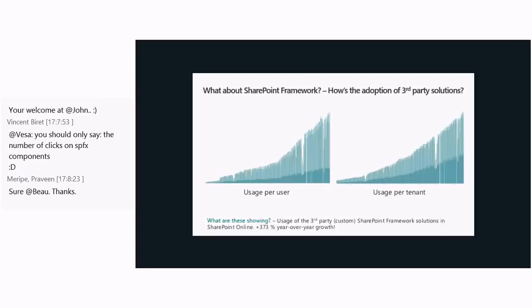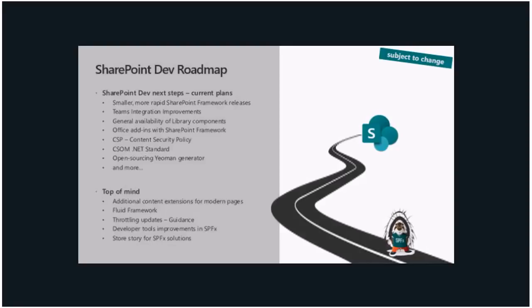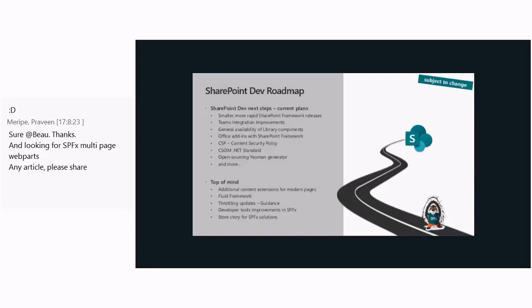Moving on to the roadmap slide — this was the updated roadmap slide used on Tuesday in the dev keynote at SPC. We're planning to move to a monthly release cycle with SharePoint Framework. The idea is that you will always know when there will be a new version available — there will always be a version on the second Tuesday of every single month. The next version, 1.9, would be coming out within three weeks, and then we'll move into this monthly cycle hopefully directly from there. This should help everybody understand when new versions will be available.